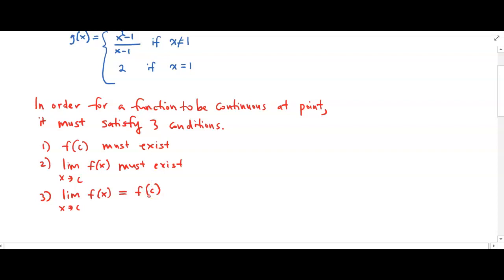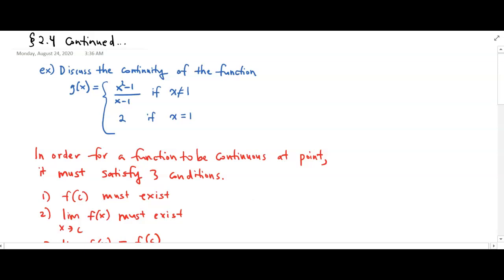In this particular example, if we use our conditions to check if this function is continuous, we'll start off with the first condition: is the function defined at 1? And the answer is yes — at x equals 1, the function is 2. Check.